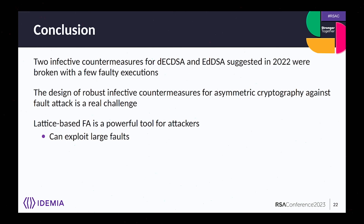In conclusion, we introduced two new attacks on infective countermeasures that were supposed to be secure against exactly this type of attack. This shows that designing robust infective countermeasures is very difficult, and proposed countermeasures should be formally proven — since even previously proven countermeasures have been broken quickly. We emphasize that lattice-based fault attacks are an efficient tool, with the main advantage of handling large faults, unlike models restricted to stuck-at-byte or 32-bit faults. Thank you.